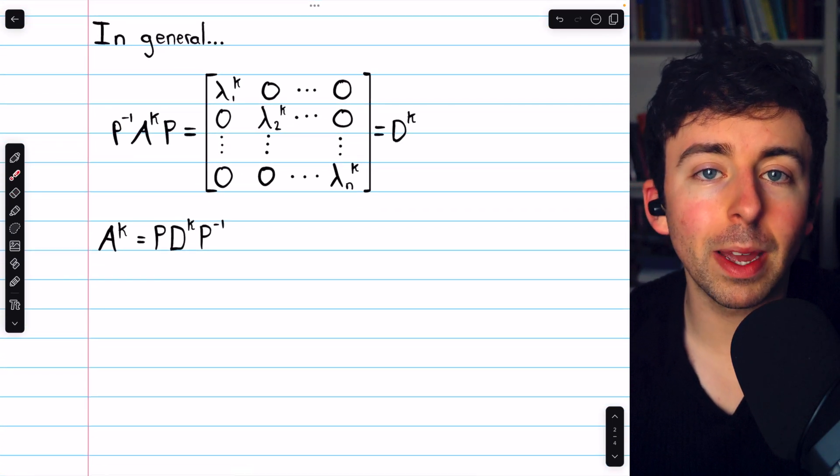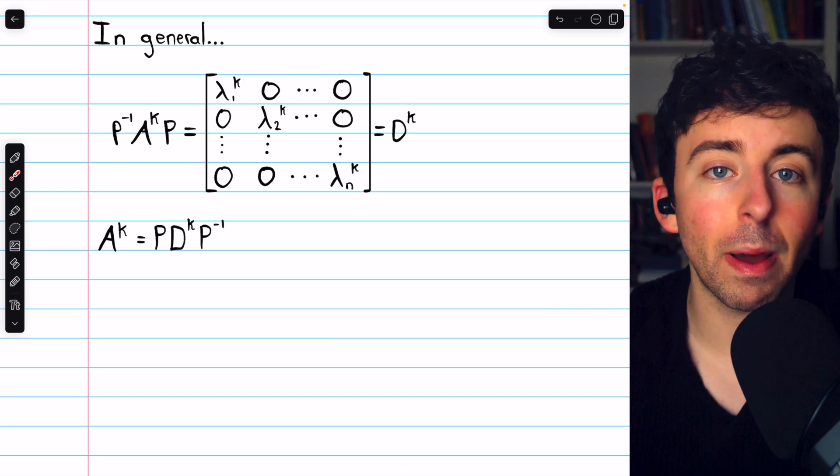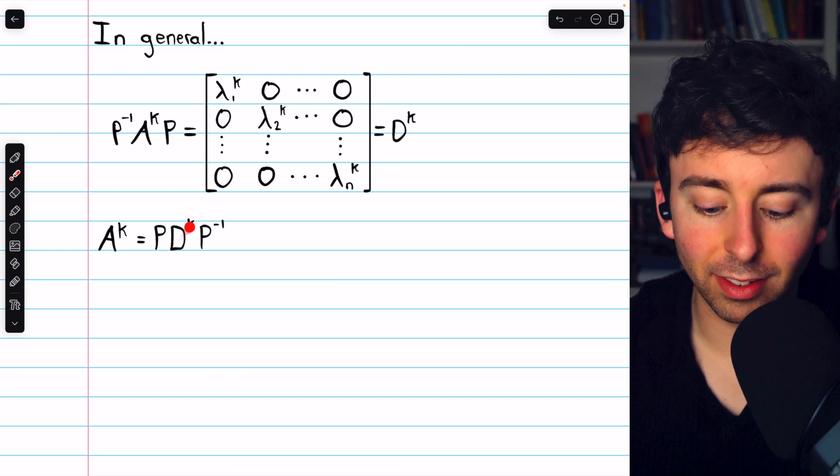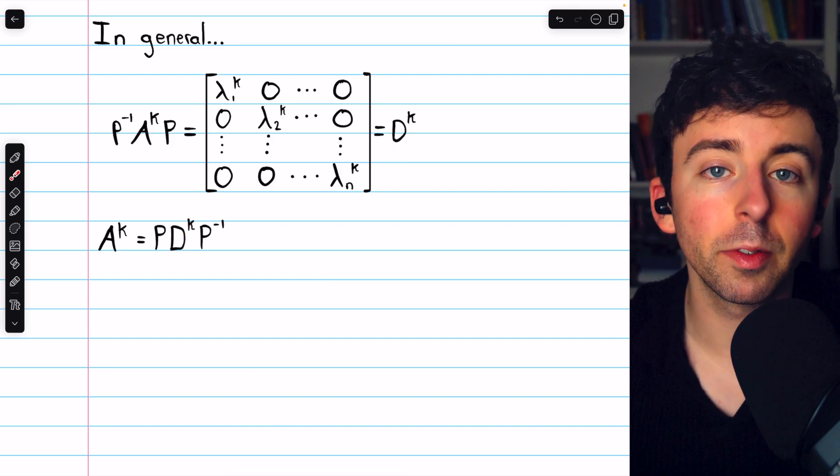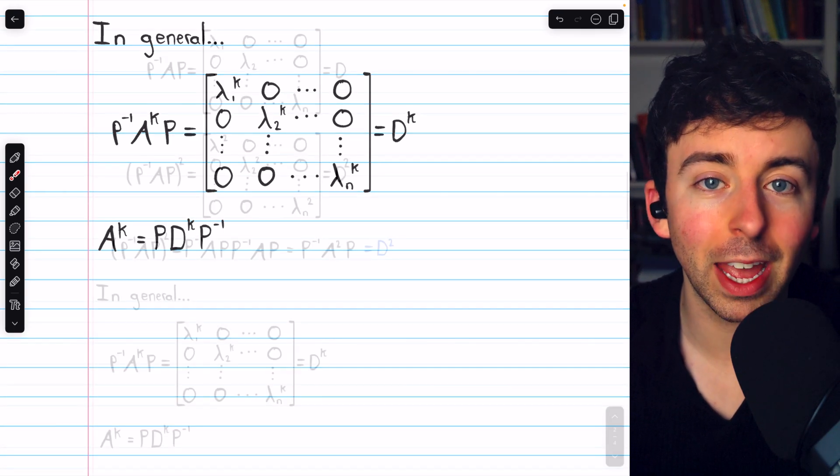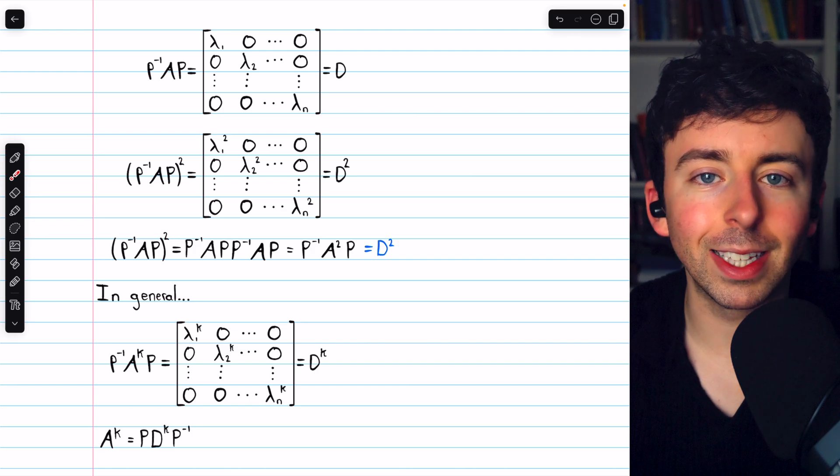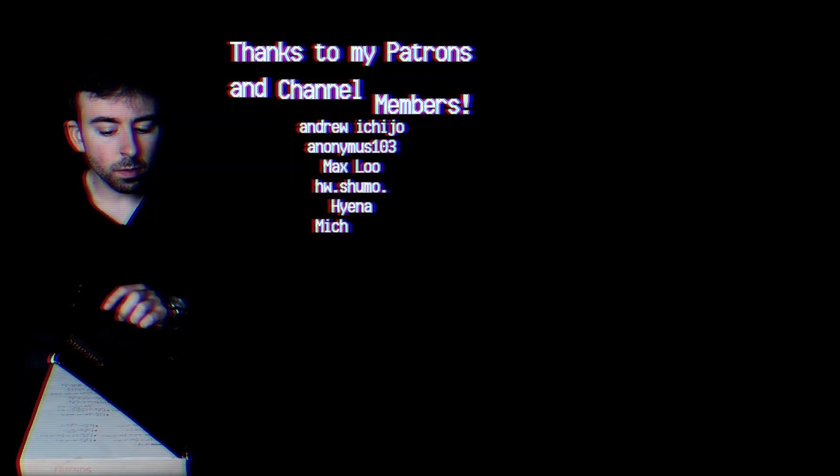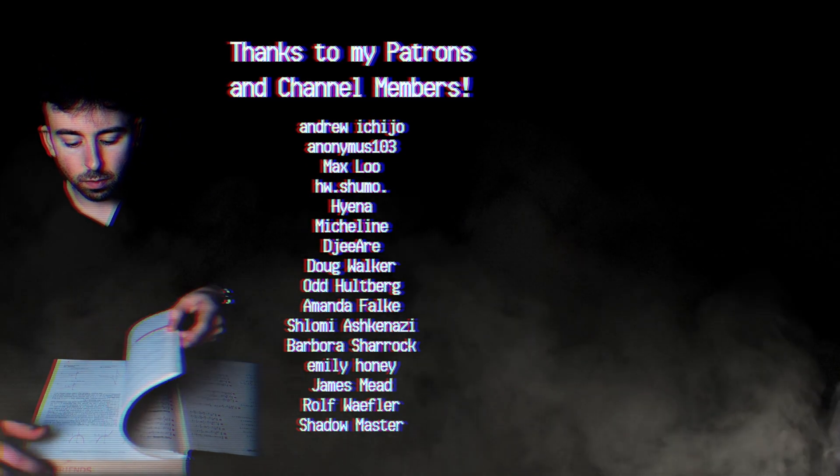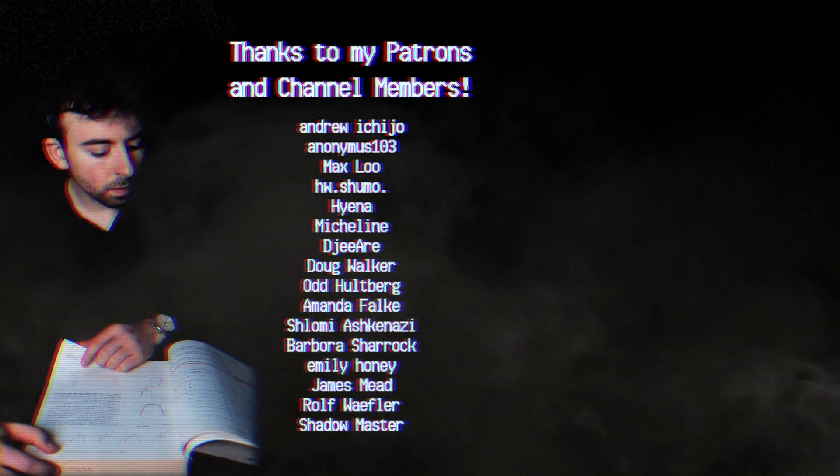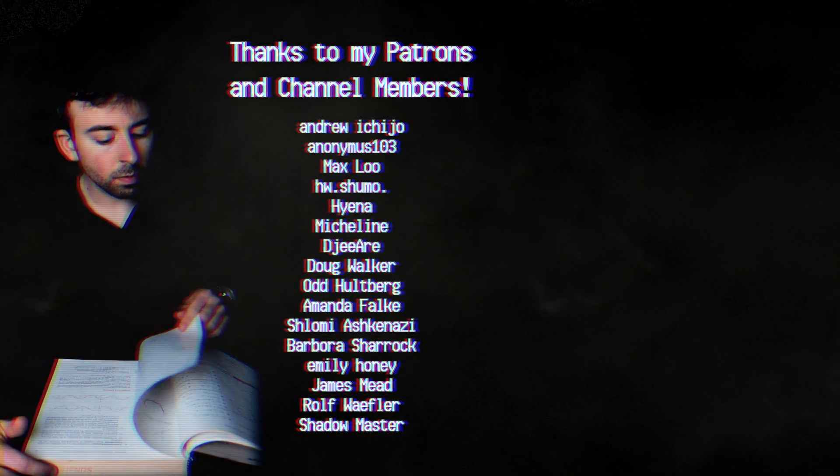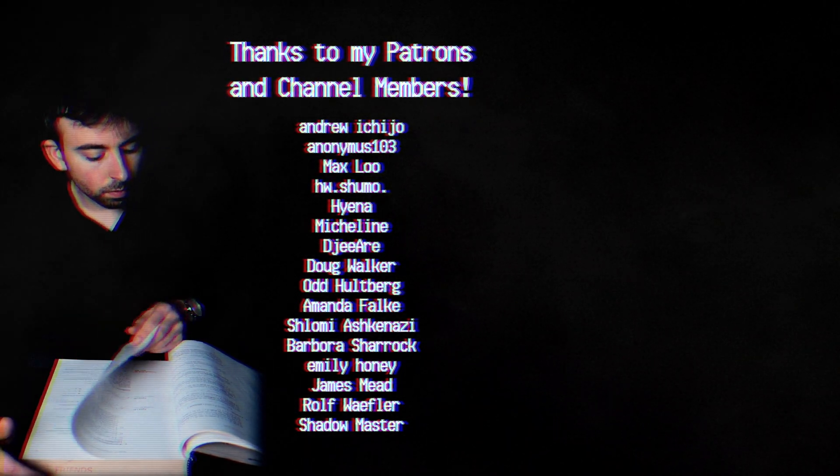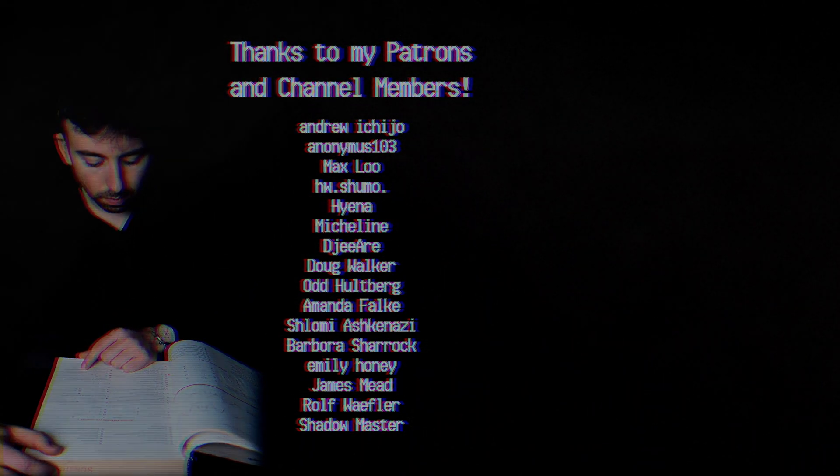Again, if you have a diagonalizable matrix A and you're trying to compute A to the power of K, all you have to do is take the diagonalizing matrix P, multiply it by that similar diagonal matrix D to the desired power of K, and multiply that by P inverse. And that's A to the power of K. Let me know in the comments if you have any questions and be sure to check out my linear algebra course and linear algebra exercises playlists in the description for more. Thank you.